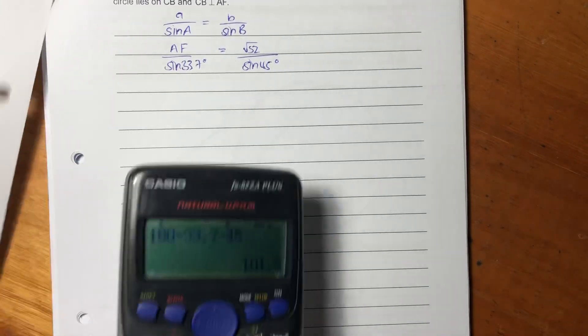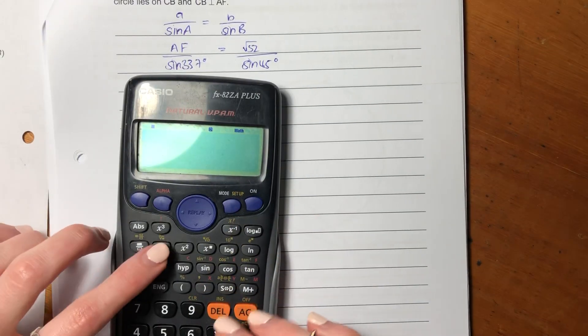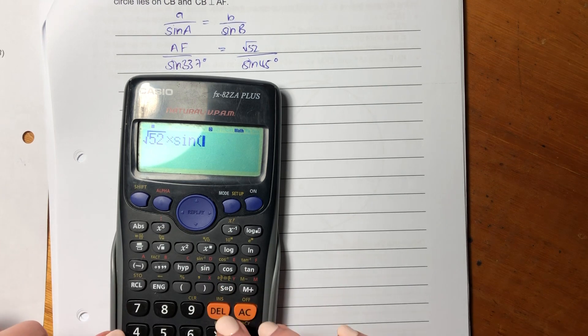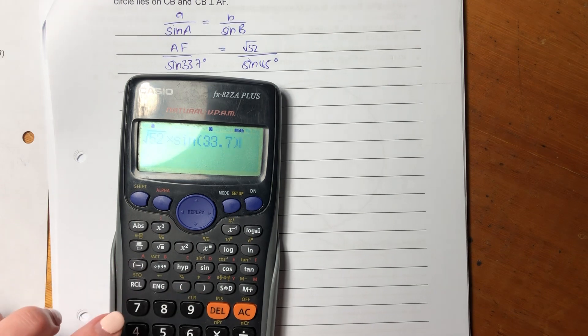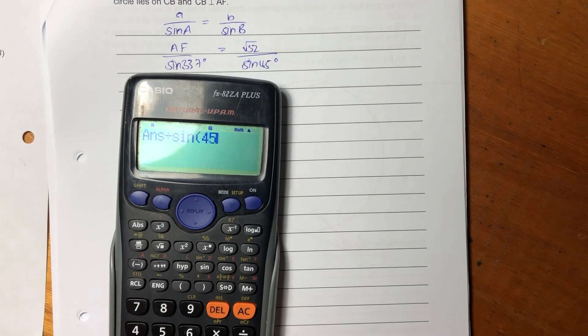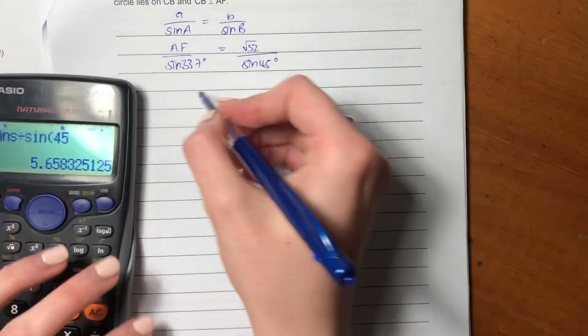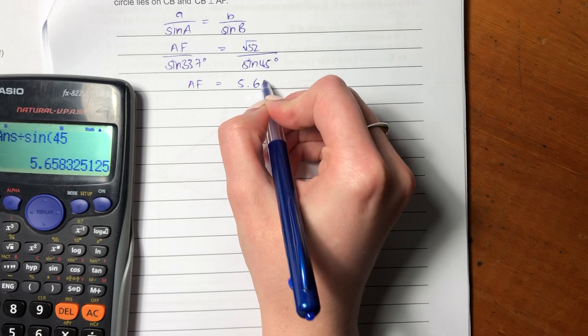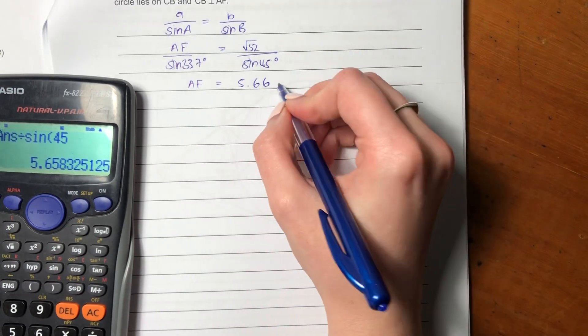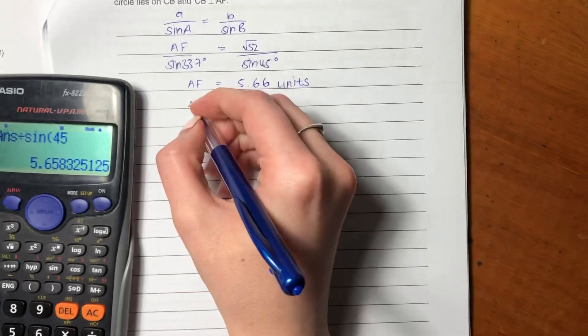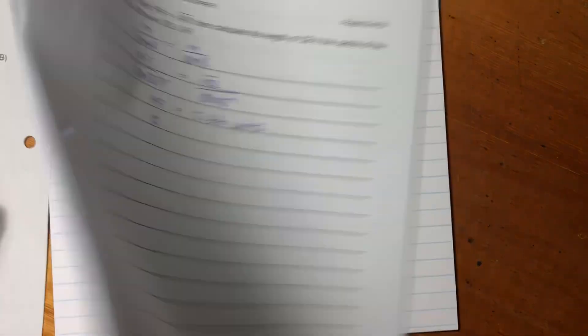So now let's work out what the length of AF is. The length of AF is square root 52 times sine 33.7, and then divide that by sine 45. So I'm getting AF equal to 5.66 units. So then we know that CF...